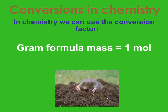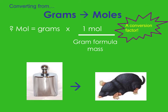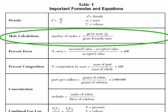For conversions in chemistry, we use the gram formula mass, which comes from the atomic mass on the periodic table, and that equals 1 mole. To convert from grams to moles, you divide by the gram formula mass written as a fraction. The number of moles equals the mass divided by the gram formula mass.